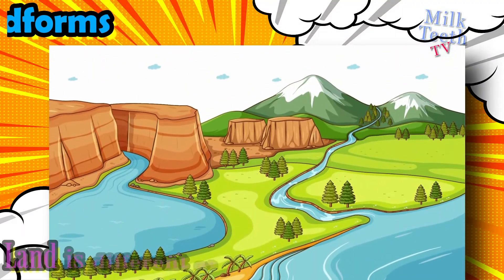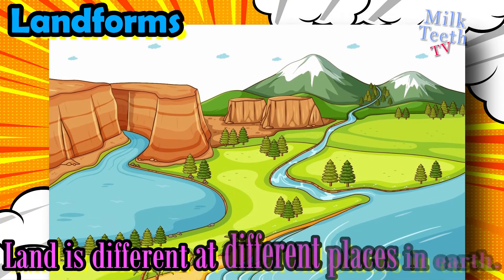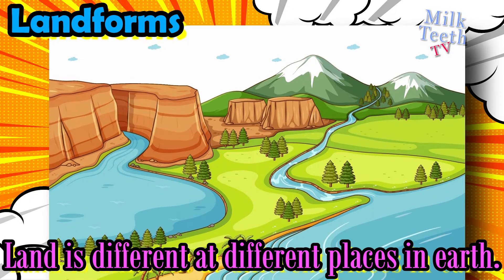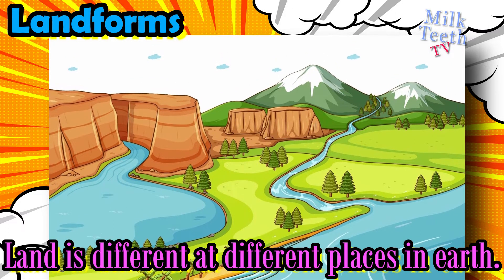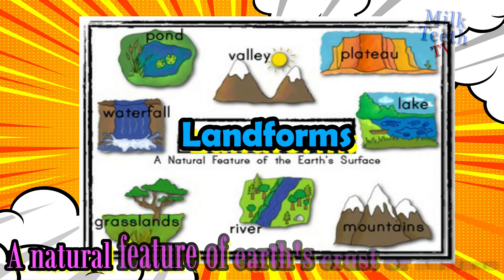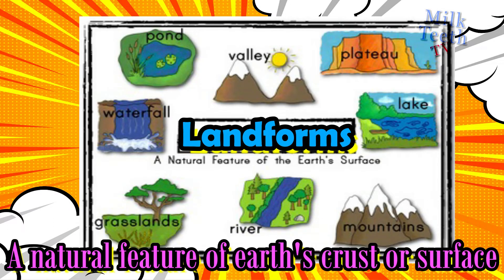The land on Earth is different at different places. These differences in the land of Earth are known as landforms of the Earth. A landform is a natural feature of Earth's crust or surface. A part of the Earth can be plains, whereas another part can be a mountain, whereas some other part can be a plateau. So let's study the different types of landforms.